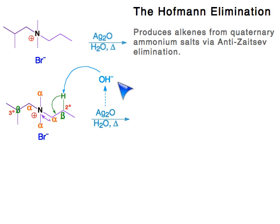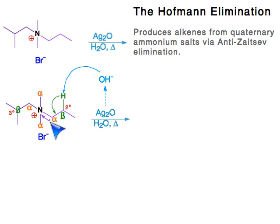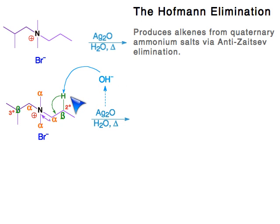The hydroxide grabs this hydrogen, and these electrons — the arrow goes from these electrons down to here — and then these electrons jump onto the nitrogen. Why? Because the nitrogen with a positive charge is a good leaving group, and it drives this reaction, making this hydrogen acidic. So: hydroxide to hydrogen, these electrons drop down to here, and these electrons neutralize that charge, breaking this bond.